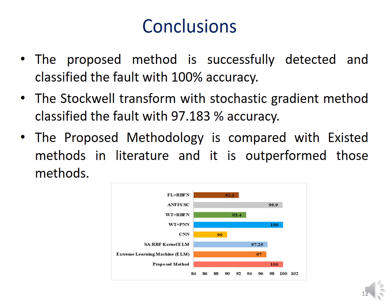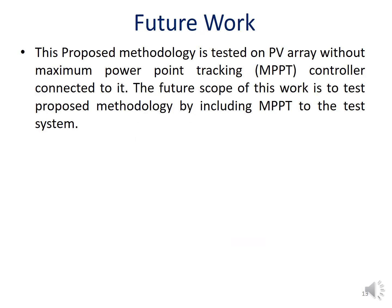In conclusion, the proposed method successfully detected and classified faults with 100% accuracy, except for Stochastic Gradient Descent which achieved 97.183%. The proposed method was compared with existing methods in the literature and outperformed them, including CNN, Wavelet Transform with probabilistic neural network, and Wavelet Transform with RBFN, as shown in the comparison table.